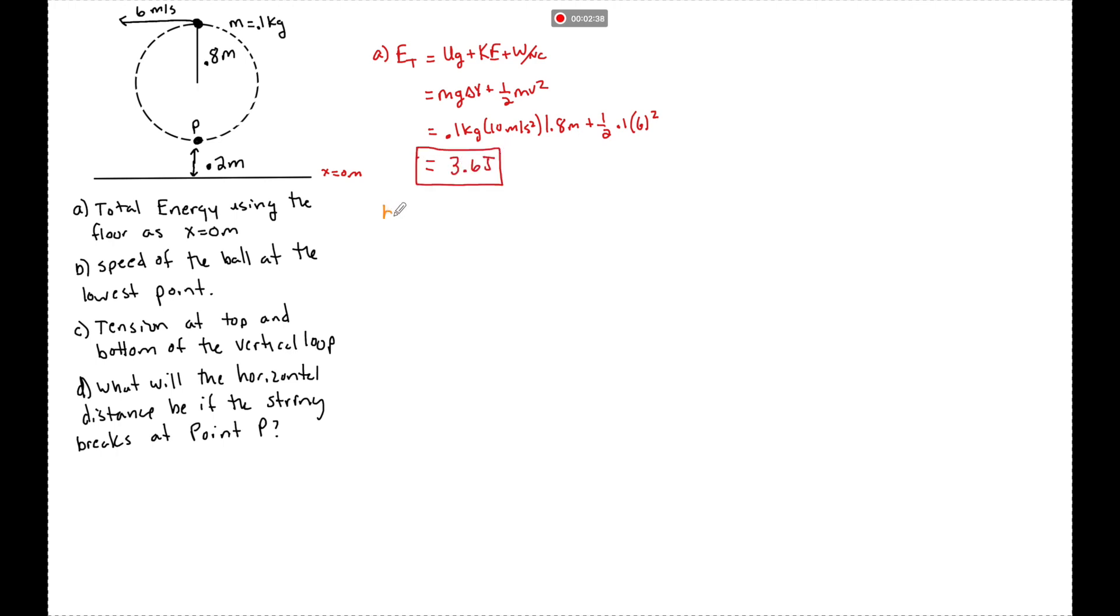Now, at part B, if energy is conserved, which it is in this case, the energy total at the bottom of the loop is going to be equal to, once again, UG plus KE. Well, we just solved for the total energy that's going to be converted. So if it's conserved, we say that the energy total is going to stay 3.6 joules. I'm going to have some mg delta y plus one half mv squared.